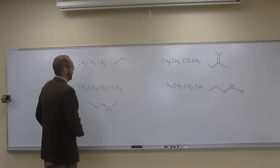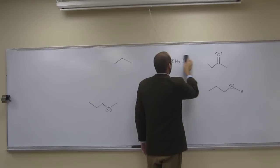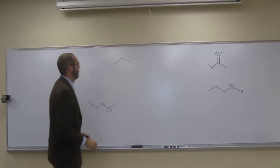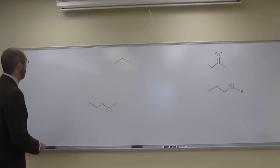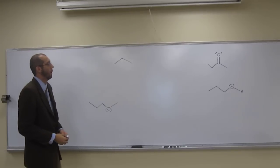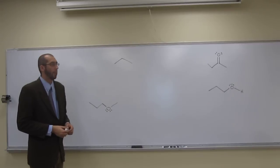So I'm going to erase the things that were given in the problem. So now we see these structures for what they are. And we can tell, well, where are the hydrogen bond donors and acceptors going to be?